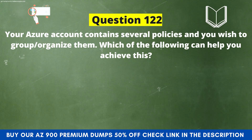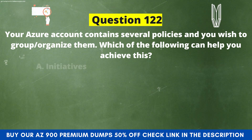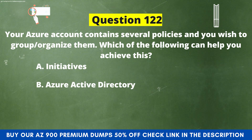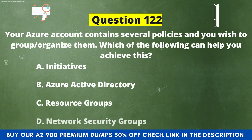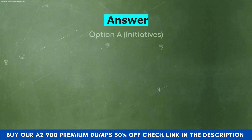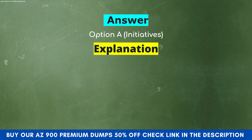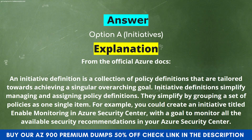Next question. Your Azure account contains several policies and you wish to group or organize them. Which of the following can help you achieve this? Option A: Initiatives. Option B: Azure Active Directory. Option C: Resource Groups. Option D: Network Security Groups. The correct answer is Option A, Initiatives. An initiative definition is a collection of policy definitions tailored towards achieving a singular overarching goal. Initiative definitions simplify managing and assigning policy definitions by grouping a set of policies as one single item. For example, you could create an initiative titled 'Enable Monitoring in Azure Security Center' with a goal to monitor all available security recommendations.